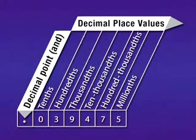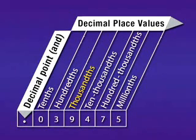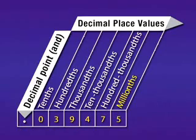The first place to the right of the decimal is the tenths. Then we have the hundredths, then the thousandths, then the ten-thousandths, the hundred-thousandths, and the millionths. So this number is thirty-nine thousand four hundred and seventy-five millionths.